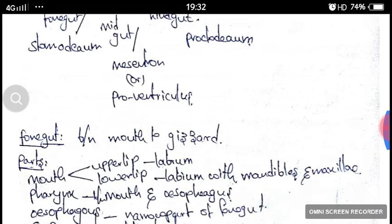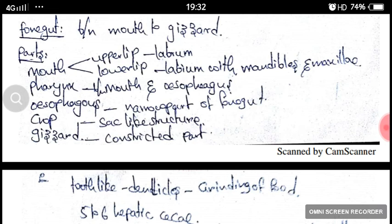The foregut is extended between mouth to gizzard. The foregut consists of the following parts: mouth, pharynx, esophagus, crop, and gizzard.